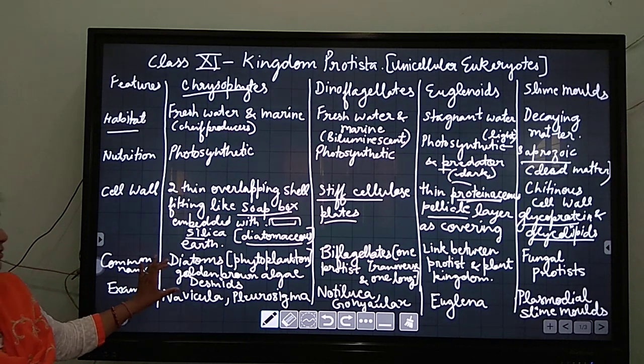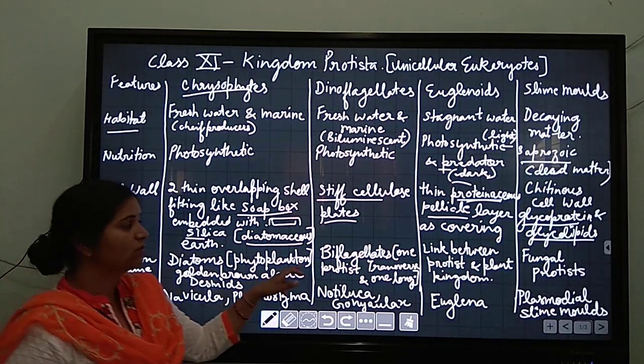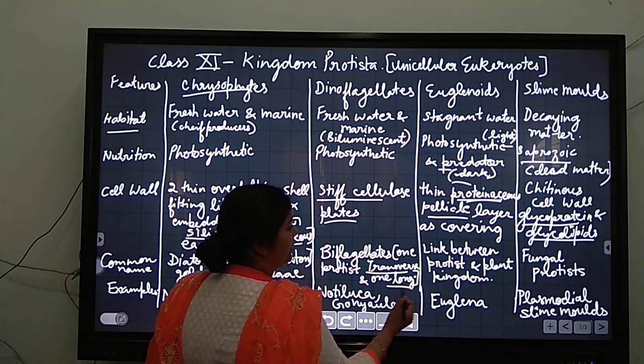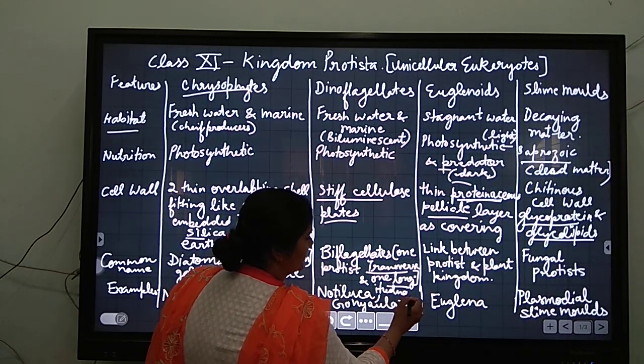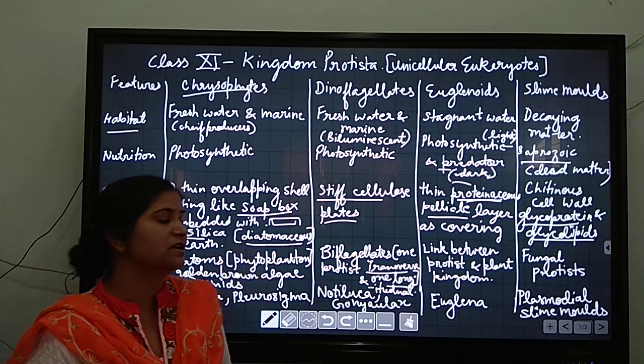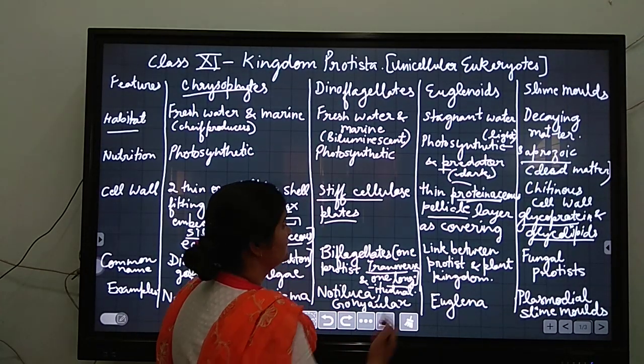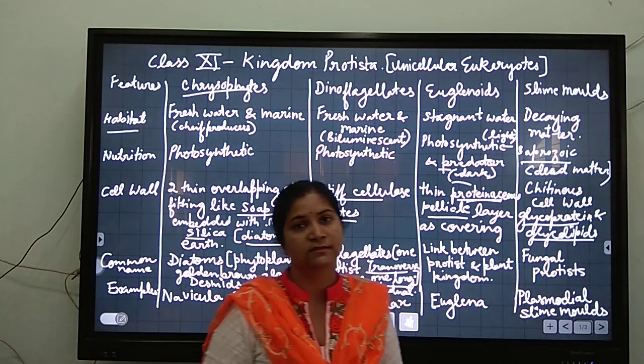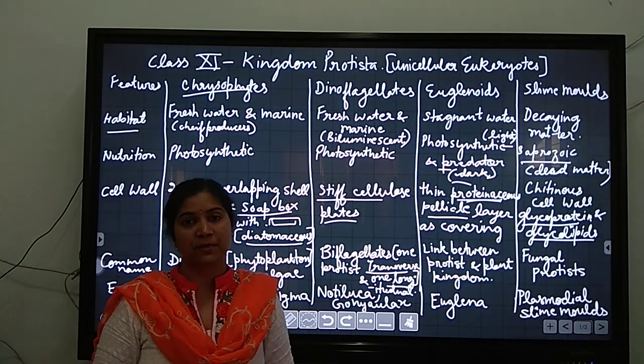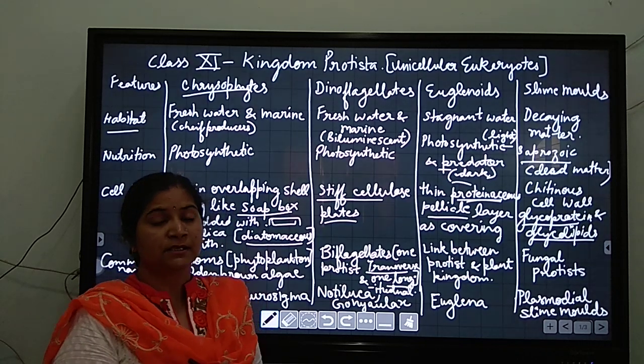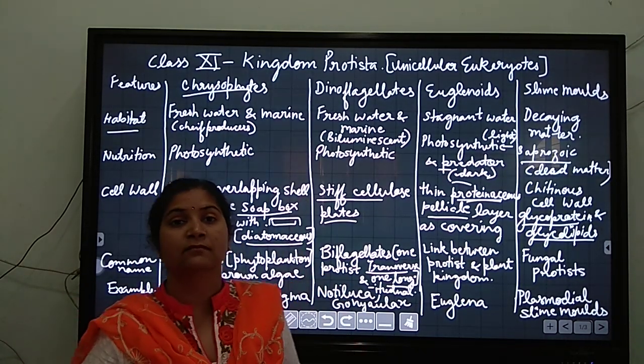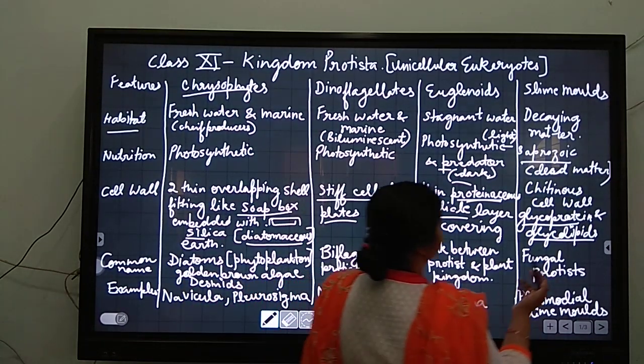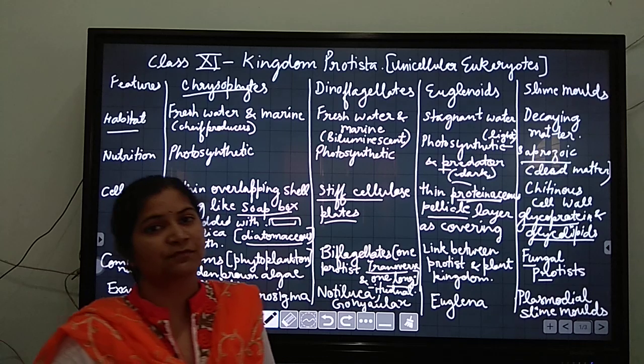Now coming to the common names. They are known as diatoms, golden brown algae, or desmids. Dinoflagellates are known as biflagellate protists because they have two flagella - one transverse flagella and one longitudinal flagella. Euglenoids are the link between the protist and plant kingdom. Here, slime molds have the formal name fungal slime protists.